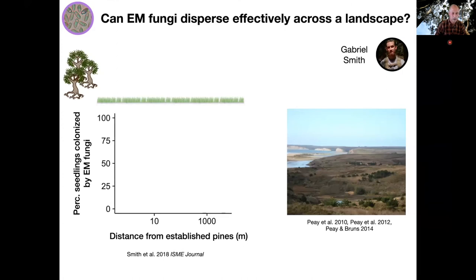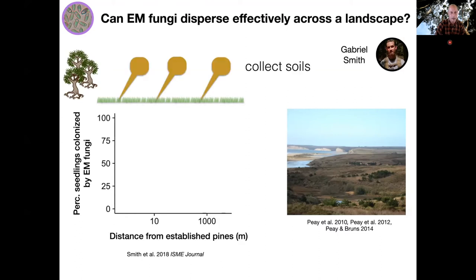I've been studying dispersal of ectomycorrhizal fungi in a number of ways, but I want to show you results from a recent paper led by one of my graduate students, Gabriel Smith. Because Suellis pungens and other ectomycorrhizal fungi are host-specific, we know the location of potential propagule sources — which is the pines. We can measure how well these fungi disperse across this landscape by collecting soils, bringing them back to the lab, and assaying the colonization of bait seedlings growing in the greenhouse. We can look at the percentage of the root system occupied by these fungi and use molecular methods to characterize their diversity.